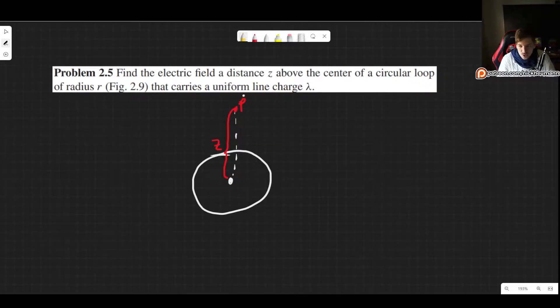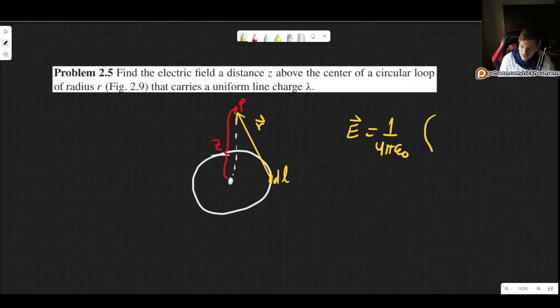The situation is what I drew right here. We have this circular loop of radius r, and from its center we go up a certain distance z. That's going to be our variable - in the end we'll get an electric field that depends on that distance z. This is our point of interest.